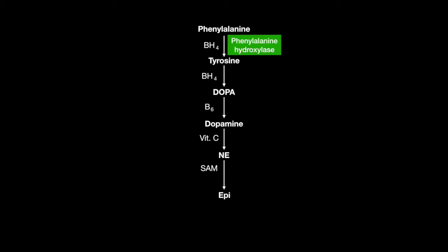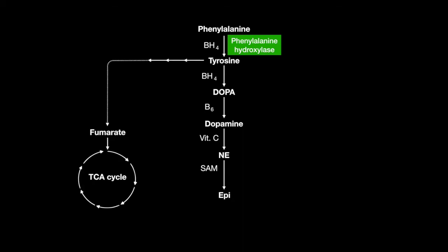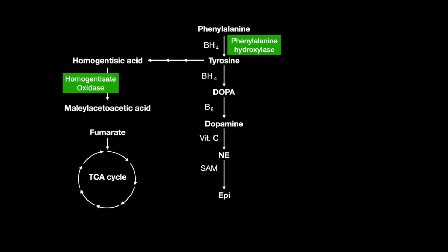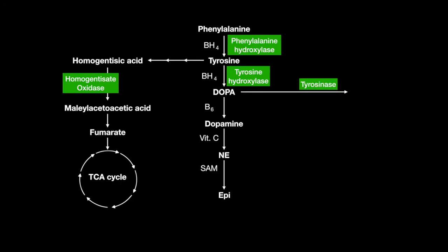Now let's examine specifically the catecholamine synthesis and tyrosine catabolism. The enzyme that catalyzes phenylalanine to tyrosine is phenylalanine hydroxylase. Tyrosine can enter the TCA cycle at fumarate — it must go through a series of reactions where it becomes homogentisic acid, then with homogentisate oxidase, it is turned into maleoacetoacetic acid, and then finally fumarate where it can enter. Tyrosine hydroxylase catalyzes tyrosine to DOPA, requiring BH4. Tyrosinase catalyzes DOPA to melanin. The deficiency of tyrosinase can thus lead to albinism.